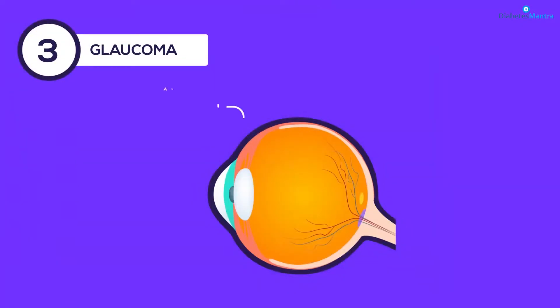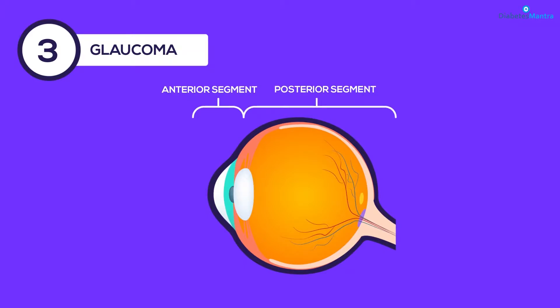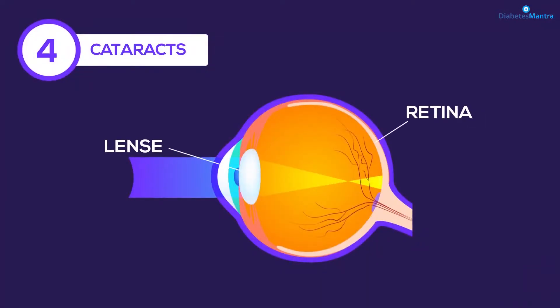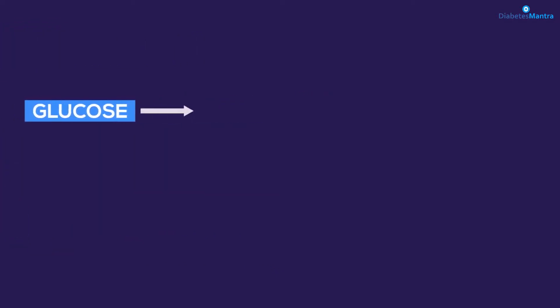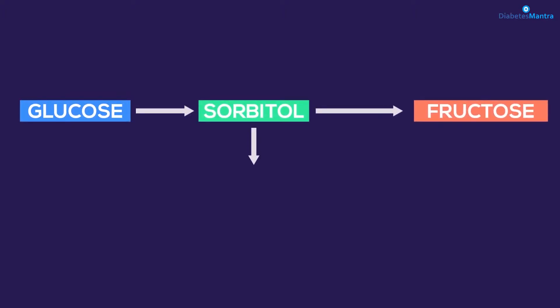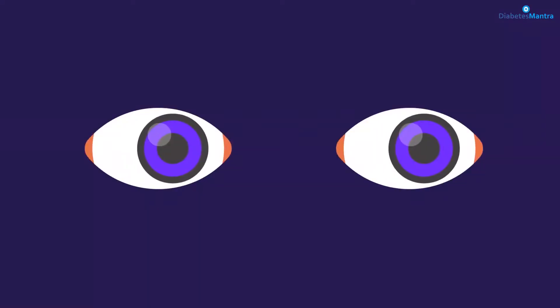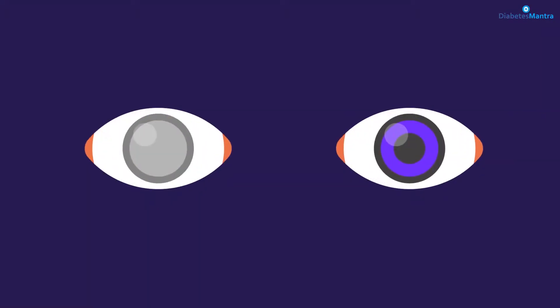Third, glaucoma. Glaucoma is a group of eye diseases that can damage the optic nerve, the bundle of nerves that connect the eye to the brain. Diabetes doubles the chances of having glaucoma, which can lead to vision loss and blindness if not treated early. Symptoms depend on which type of glaucoma you have. Fourth, cataract. The lenses within our eye are clear structures that help provide sharp vision, but they tend to become cloudy as we age. People with diabetes are more likely to develop cloudy lenses called cataracts, often at an earlier age. Researchers think that high glucose levels cause deposits to build up in the lenses of your eye.